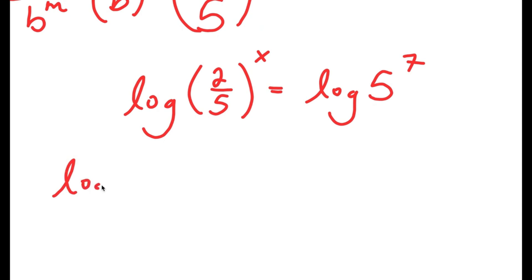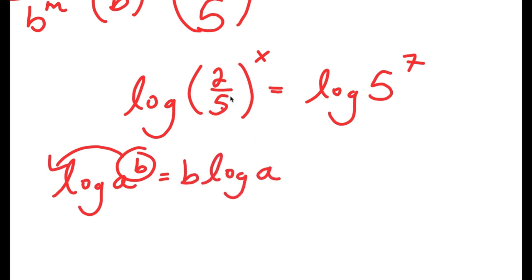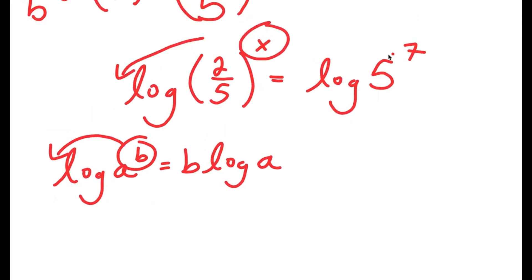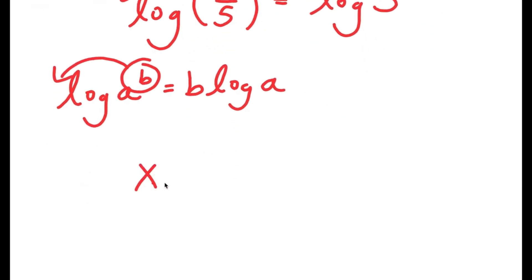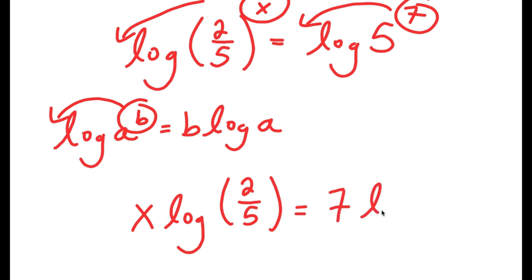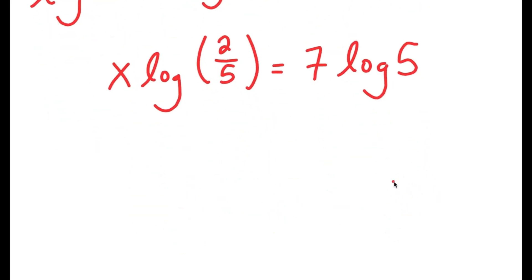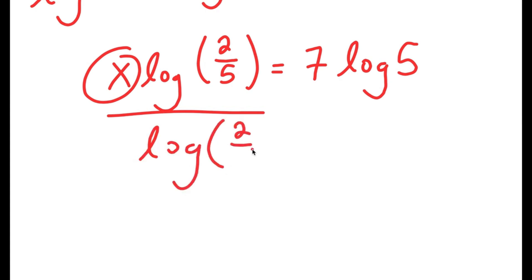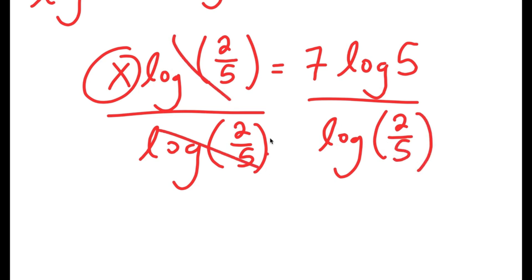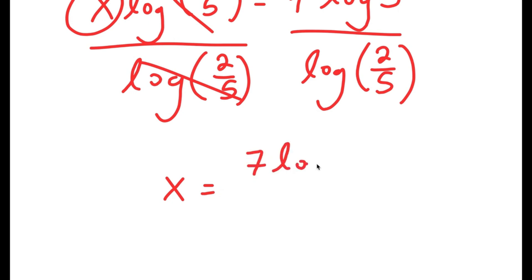If I have something in the form log a to the power of b, I can move this exponent b to the front, so I get b times log a. In this case, I can move x to the front from log of 2 over 5 to the power of x, and move 7 to the front from log 5 to the power of 7. So I get x times log 2 over 5 is equal to 7 times log 5. Now to find the value of x, I divide both sides by log 2 over 5. These two cancel out, and I get x is equal to 7 times log 5 over log 2 over 5.